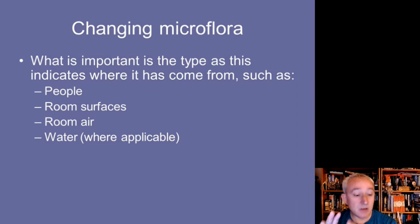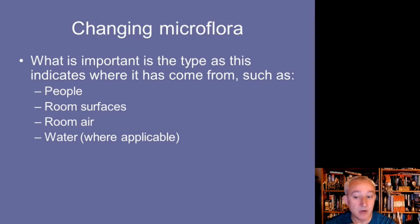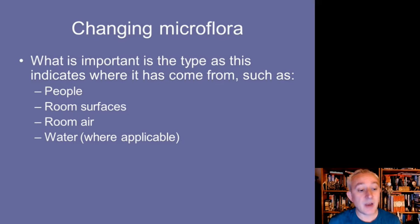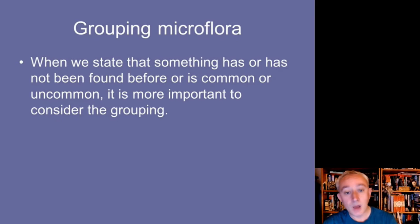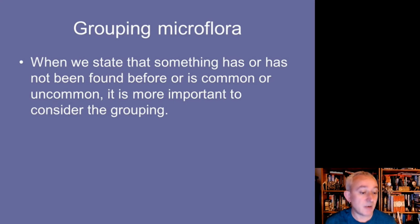Changing types of organisms also give clues about people's behaviors and practices - perhaps new staff, changes to shifts, contamination on room surfaces, room air distributions, or water used for cleaning purposes that may have a particular association. It's also useful when we find something to check whether we've found it before, and we can start grouping organisms as to where they are common or uncommon. This also helps with the detective work process.